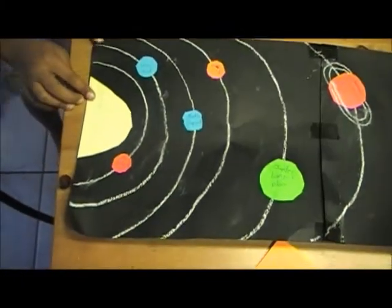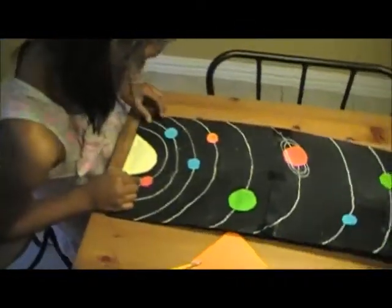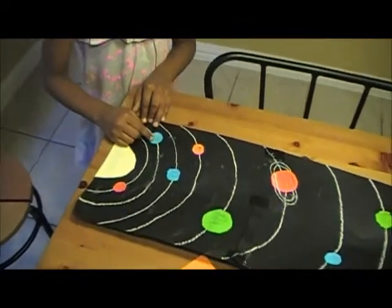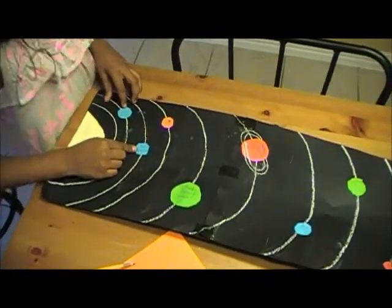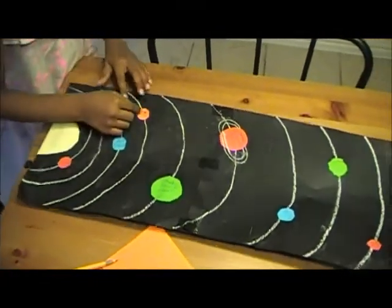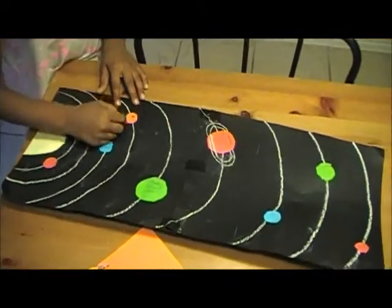This is the sun — it is a star. This is Mars — it is rocky. This is Venus — it has acid. This is Earth — it has oxygen. This is Mars — it is cold.